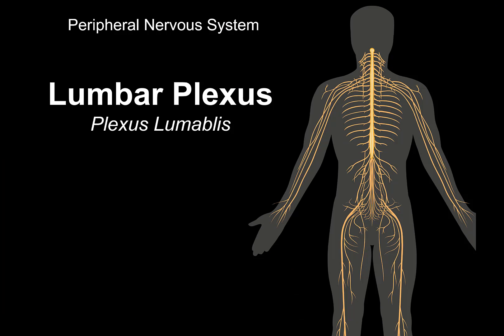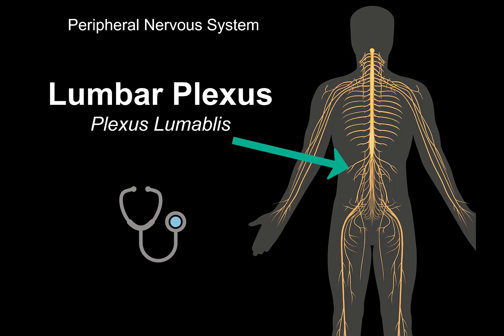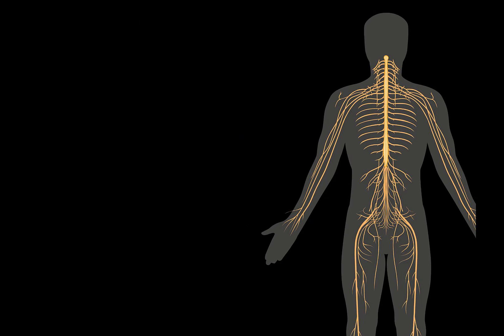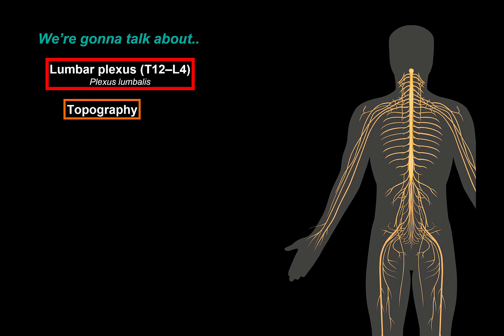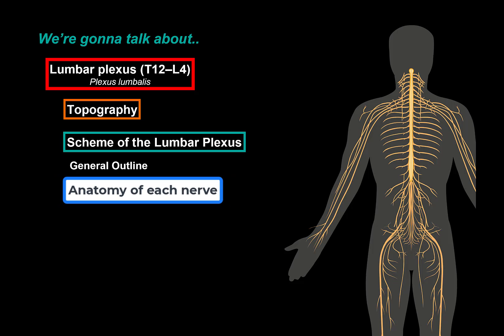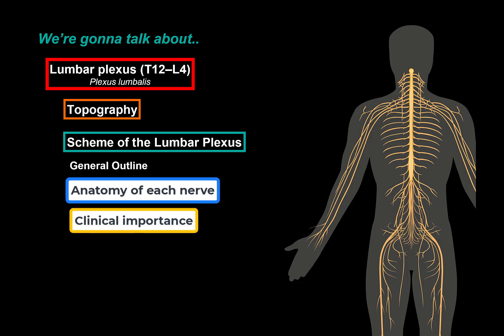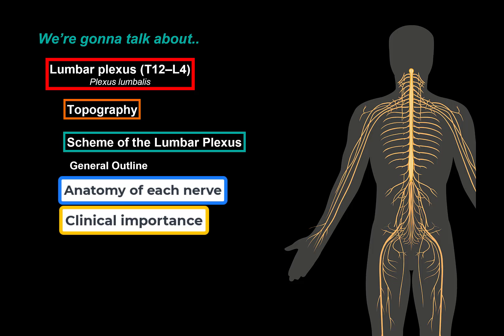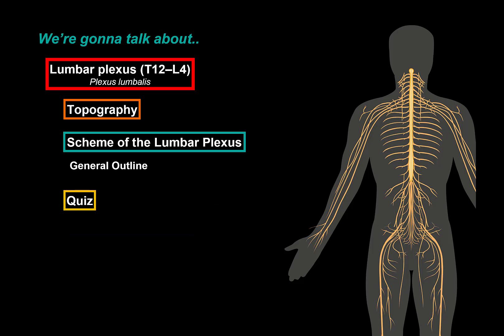In this video we're going to talk specifically about the lumbar plexus, which is really important, and we'll add some clinical correlation as well. First we'll go through the topography and talk about which nerves feed into the lumbar plexus. Then we'll make a scheme, drawing the general outline first, then going through each nerve and its clinical importance. At the end there'll be a little quiz.